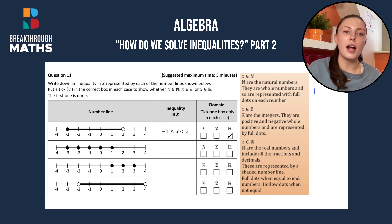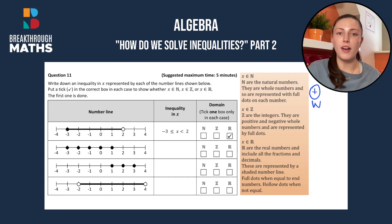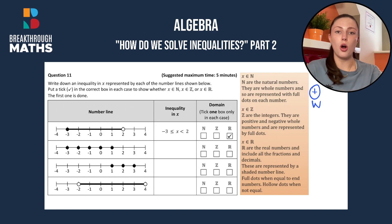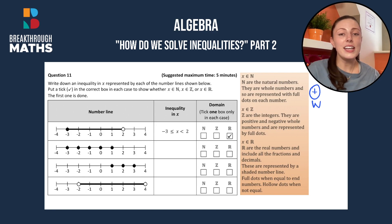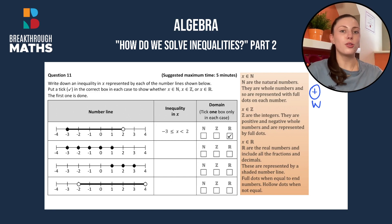Natural numbers are positive whole numbers. That means they don't include decimals or fractions and they can only be from one upwards, so they don't include any negative numbers or the number zero. So it can be one, two, three, four, etc.